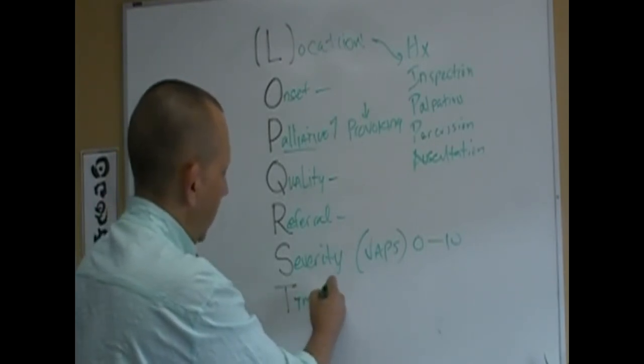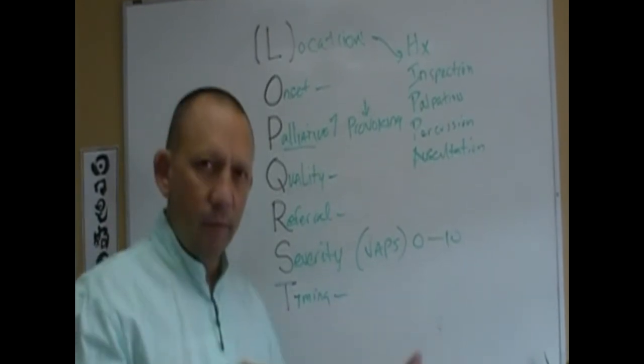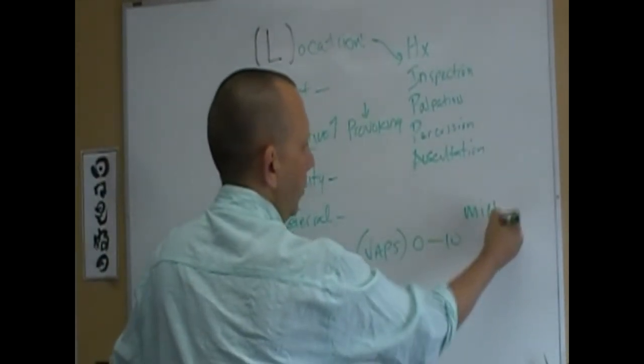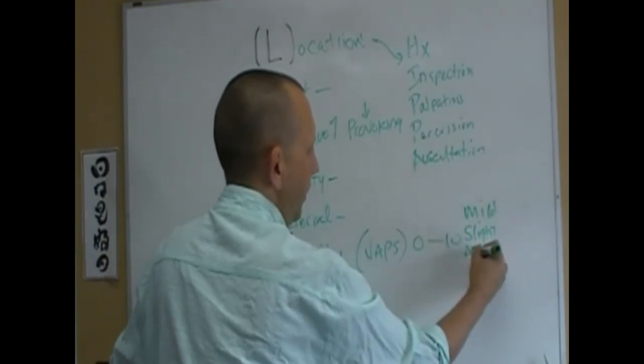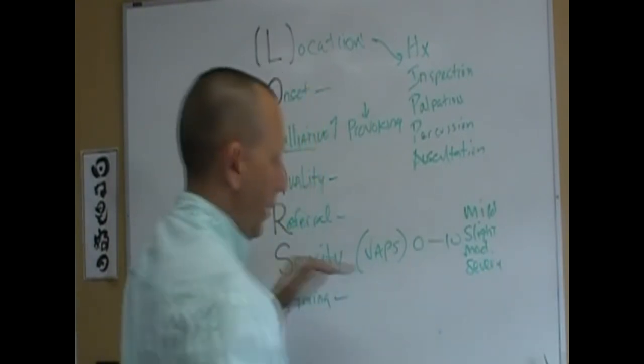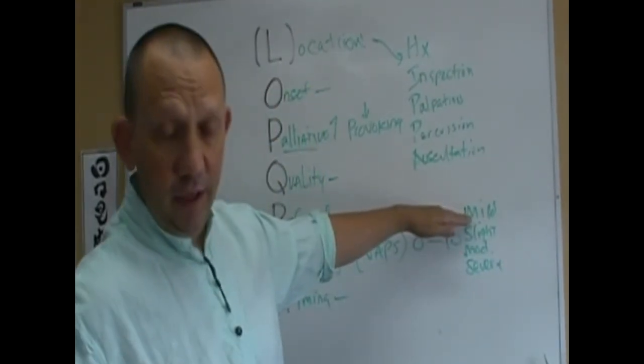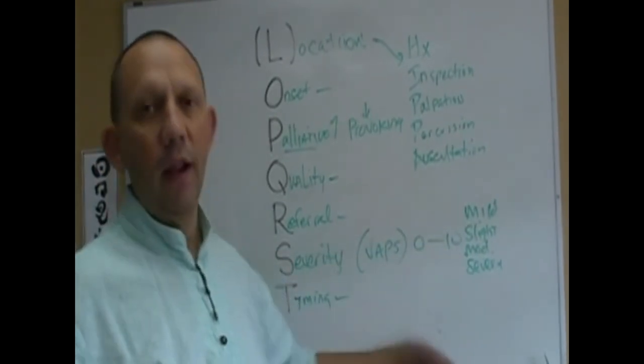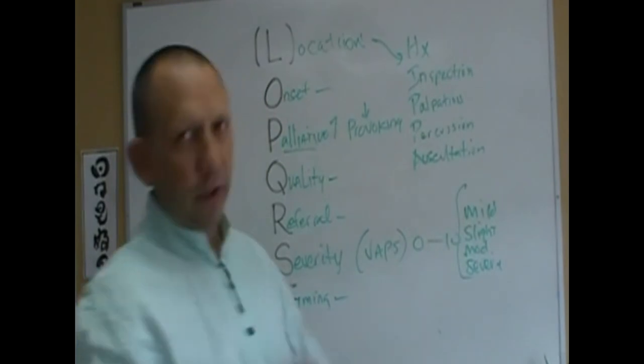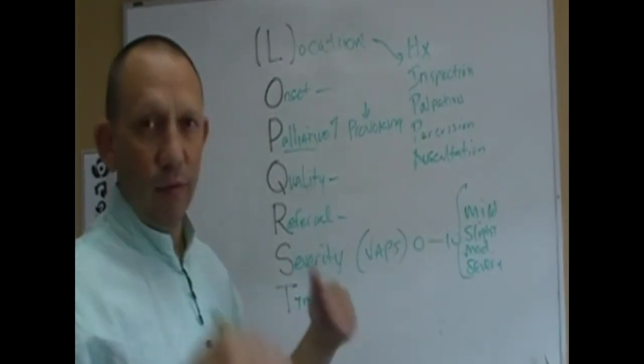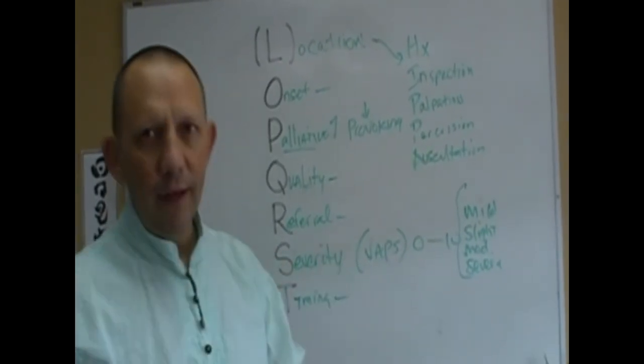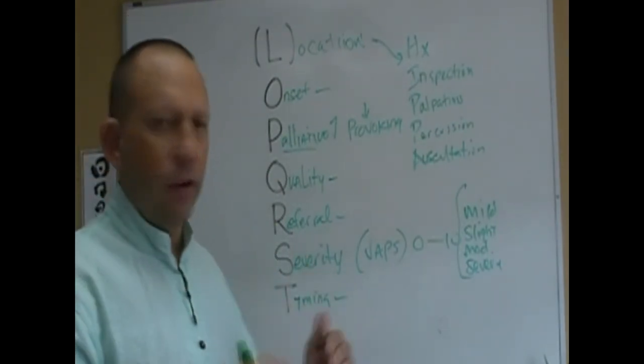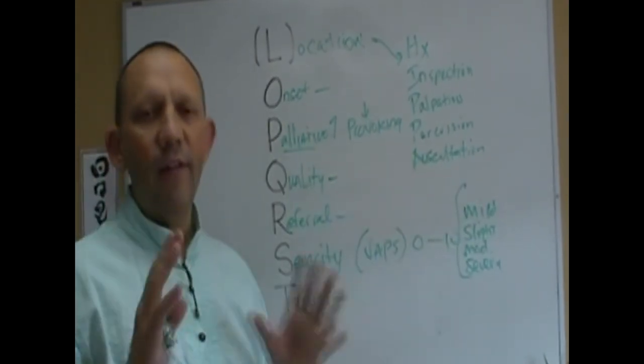Timing: is it all the time, sometimes, or frequently? Generally, for severity you can have mild, slight, moderate, or severe. One to two point five is mild, two point six to five is slight, five to seven is moderate, and seven and above is severe pain. These are med legal terms we use in reporting. Timing is whether it's occasional, intermittent, frequent, or constant. When you get all of this stuff together, now you have an idea of what's going on with that muscle or ligament.